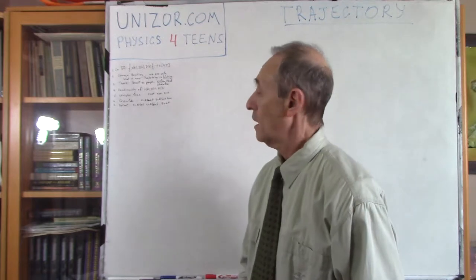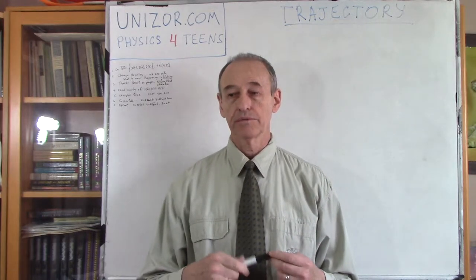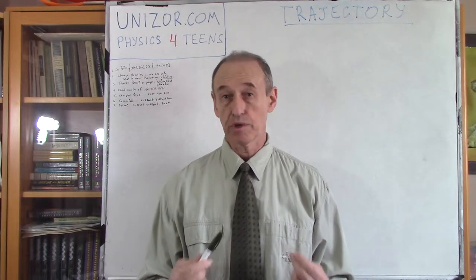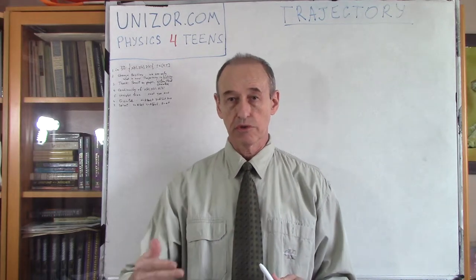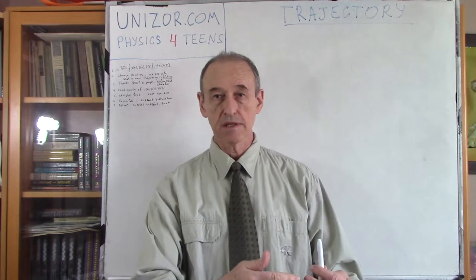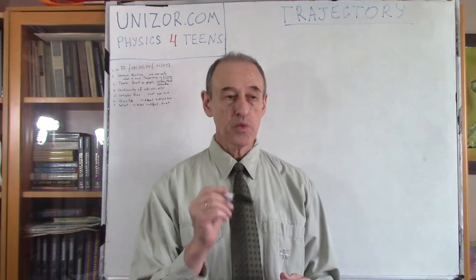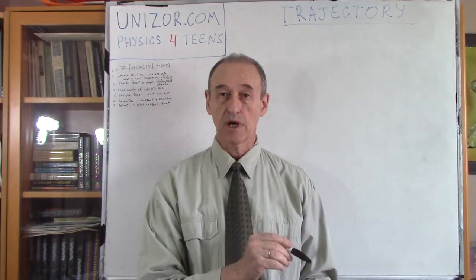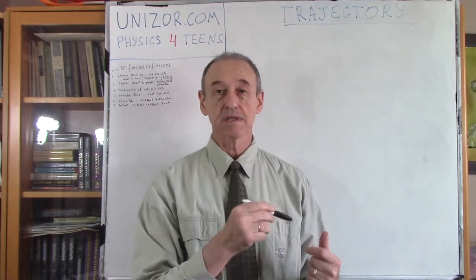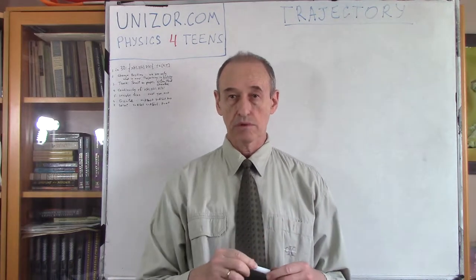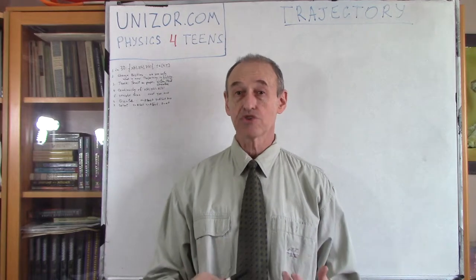Trajectory — that's the theme of this lecture. First of all, what is trajectory? We know that motion is a change of position of a certain object, which we model as a geometric point in three-dimensional space. When the object moves from one position to another, it leaves the previous position empty and takes another one. As we observe the object, we can see its position at a certain moment of time, then another moment, then another. So, trajectory is basically a set of all the points visited by this particular object during its motion.